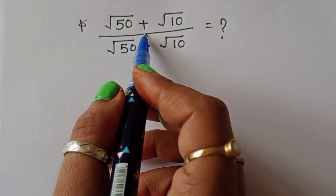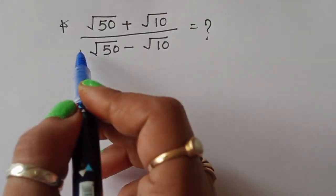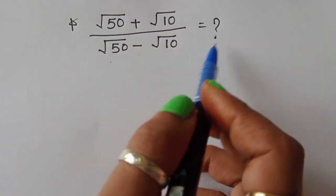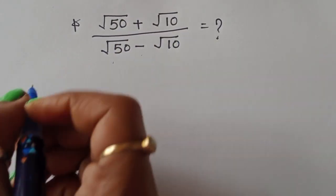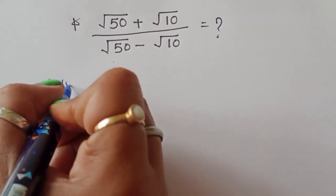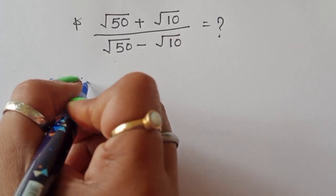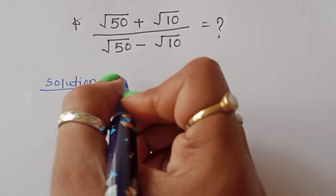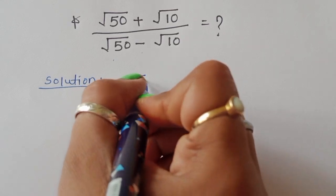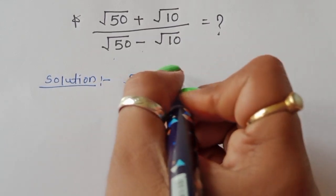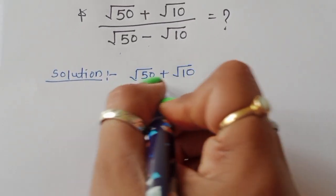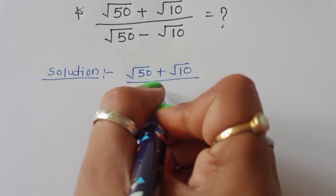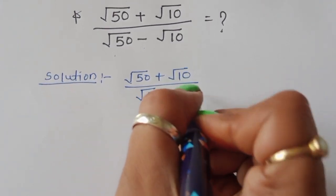The question is: given square root of 50 plus square root of 10, divided by square root of 50 minus square root of 10, we have to find out the value of this expression. Let's see the solution.